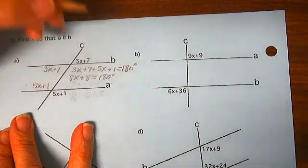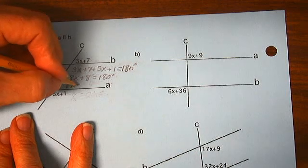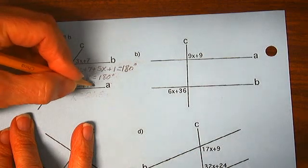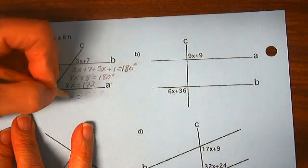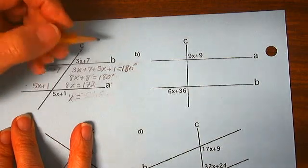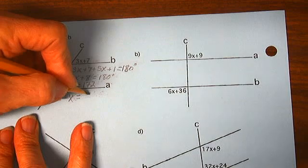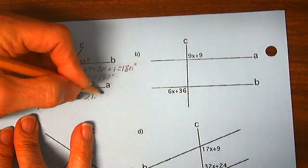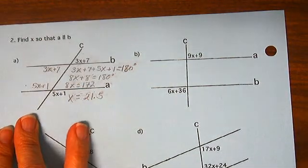Subtract 8 from both sides, 8X equals 172. Divide both sides by 8, X equals 21 and a half. Good.